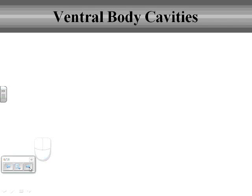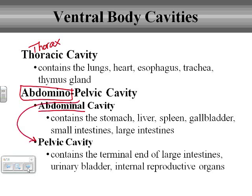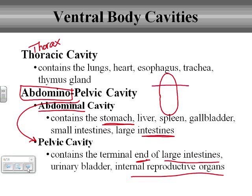Likewise, we can divide the ventral body cavity into smaller cavities. We have the thoracic cavity — that word may seem familiar because of thorax — where your heart and lungs are, which is your chest region. Then you have the abdominal pelvic cavity. You can divide it into your general stomach and intestinal area versus your pelvic area, which includes the very end of the large intestines and going down towards your reproductive organs.